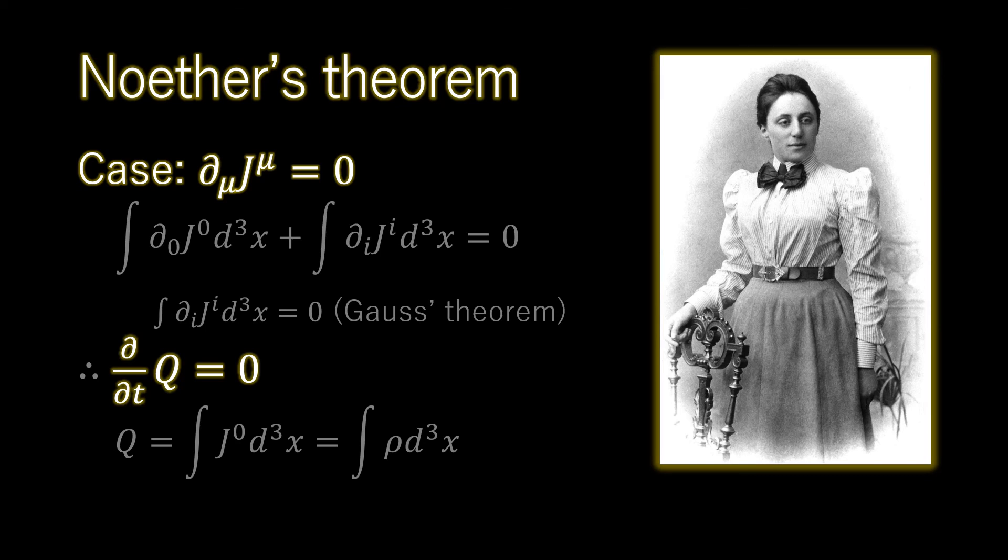Thus, whenever there is an invariance, there is a corresponding conserved quantity. It can be any kind of charge defined by the associated current.